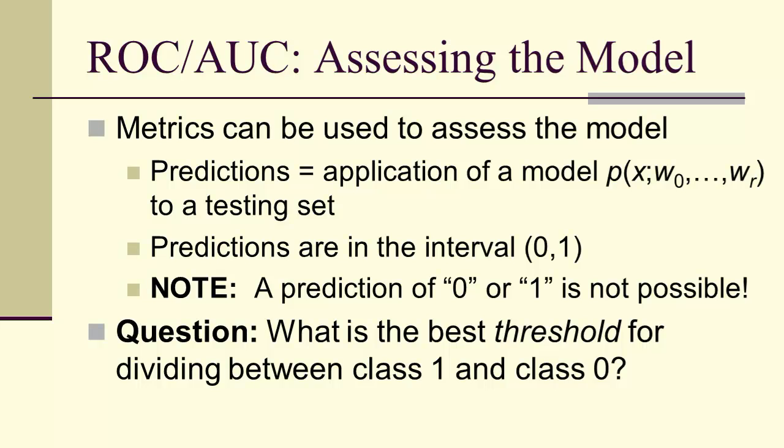So the question is going to be, what is the best threshold for dividing between class 1 and class 0? Because we won't have actual 0s and 1s for the predictions.